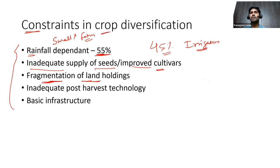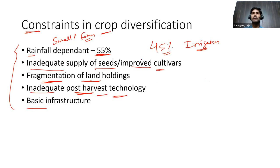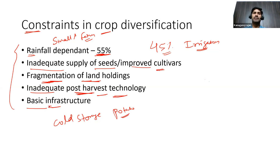Basic infrastructure such as road networks, irrigation facilities, and cold storage is lacking. In India, the majority of cold storage facilities are designed only for potato — a single crop. Lack of road networks, storage facilities, marketing, and irrigation facilities are all major challenges in crop diversification.